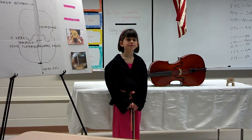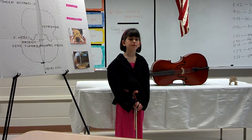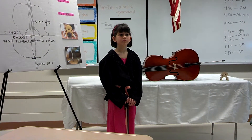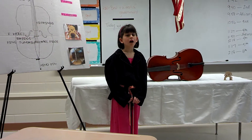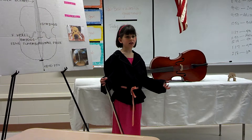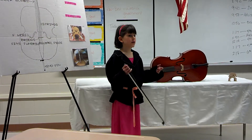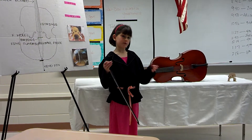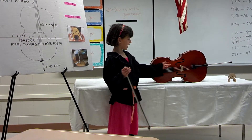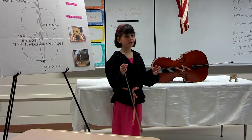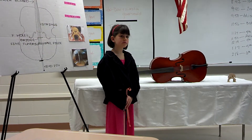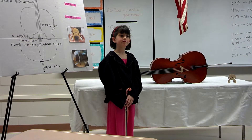Another question: what do the different bridge sizes represent — what is the purpose of the different sizes? The answer is, if you have a bigger cello, then you'll have a bigger bridge, because the strings sit higher up. So if you have a small cello, the bridge wouldn't be as big. It's based on the size of the cello itself. Thank you very much, nice job.